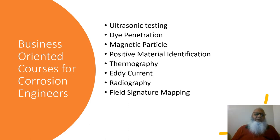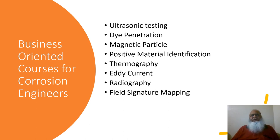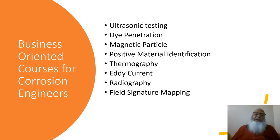This slide shows business-oriented courses for corrosion engineers, including ultrasonic testing, dye penetration, magnetic particle, positive material identification, thermography, eddy current, radiography, and field signature mapping. All these courses may not be given in university as part of corrosion engineering, but after becoming a successful graduate in corrosion or any other discipline, engineers can take these highly specialized courses at institutions or training centers, and then apply them in industry to start their own business.